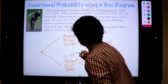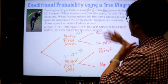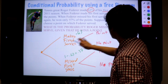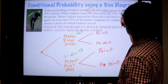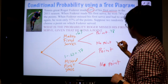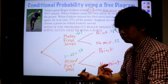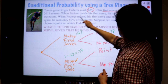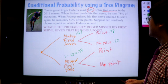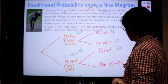When Federer made his first serve, he won 78% of points — so 0.78 — and the probability of losing the point in that serve is 0.22, which is the complement. When Federer missed his first serve and served again, he won 57% of the time — 0.57 — and the probability he doesn't win is 0.43.